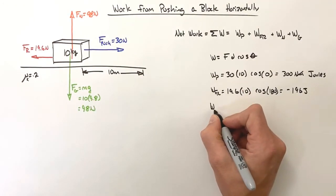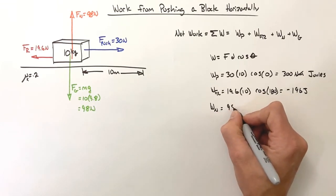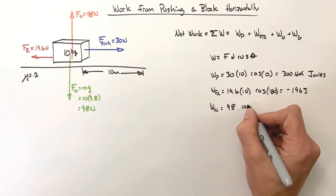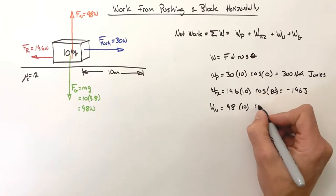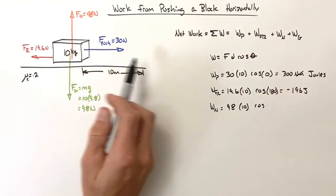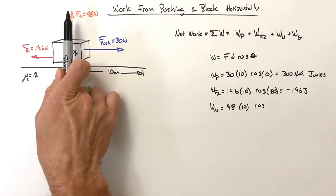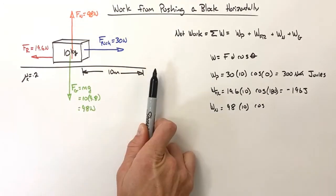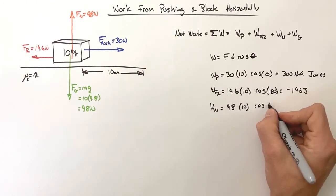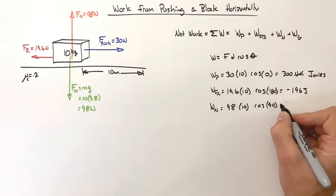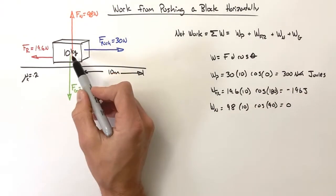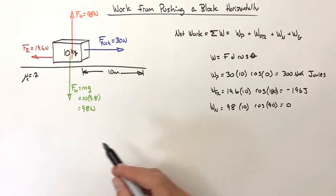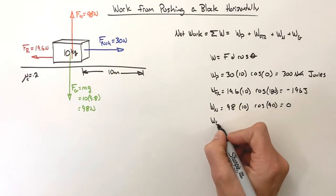Moving on to the normal force, the normal force has a magnitude of 98 newtons, the displacement is 10 meters. Now in this case, because this is on a horizontal surface, the normal force is straight up but the displacement is horizontal. That means the angle between the two is 90. That means the normal force does no work in this problem.